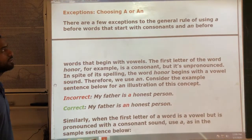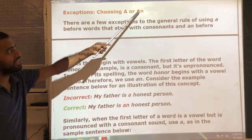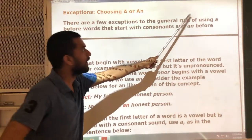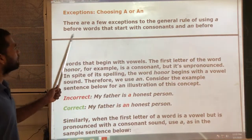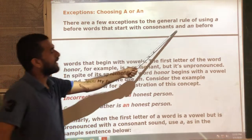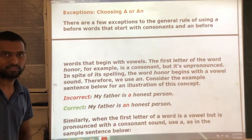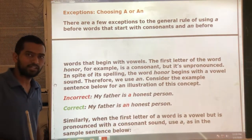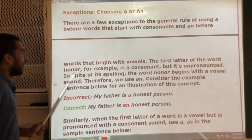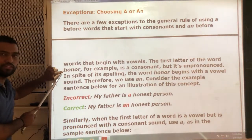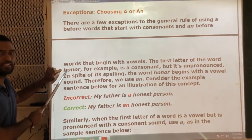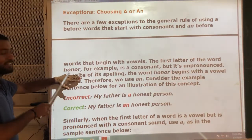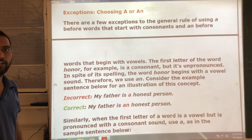There is one rule you need to remember for choosing between 'a' and 'an'. There are exceptions to the general rule of using 'a' before words that start with consonants and 'an' before words that begin with vowels. Already we know that 'a' is used before consonants and 'an' is used before vowels. But the first letter of the word 'honor' — here, H is not a vowel, it is a consonant. So the rule says 'a' should be used.